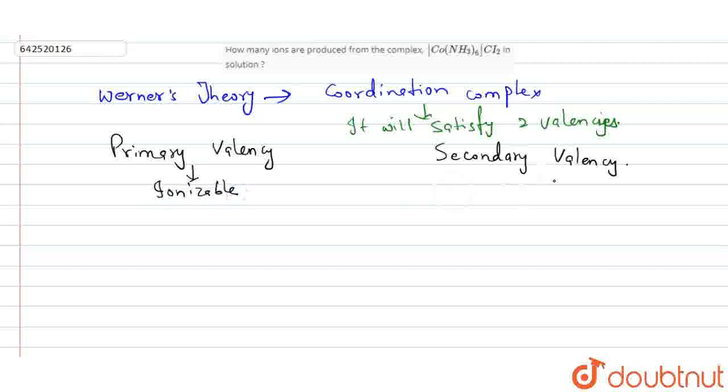Secondary valency is non-ionizable and can be positive, negative, or neutral, while primary valency can be negative only.